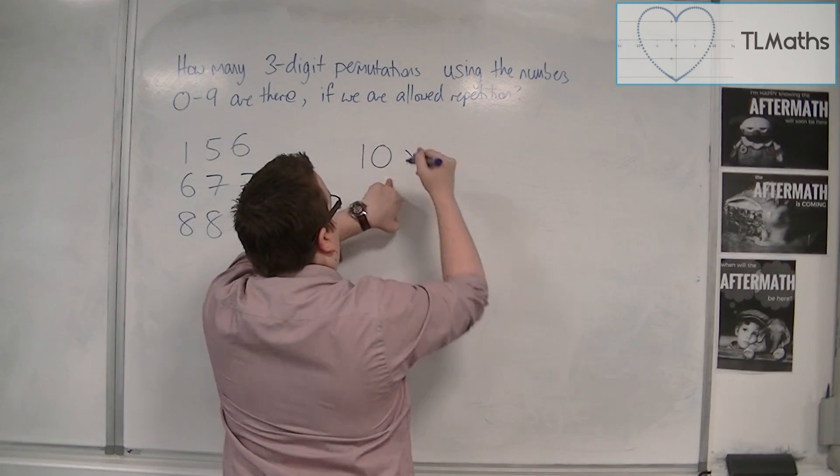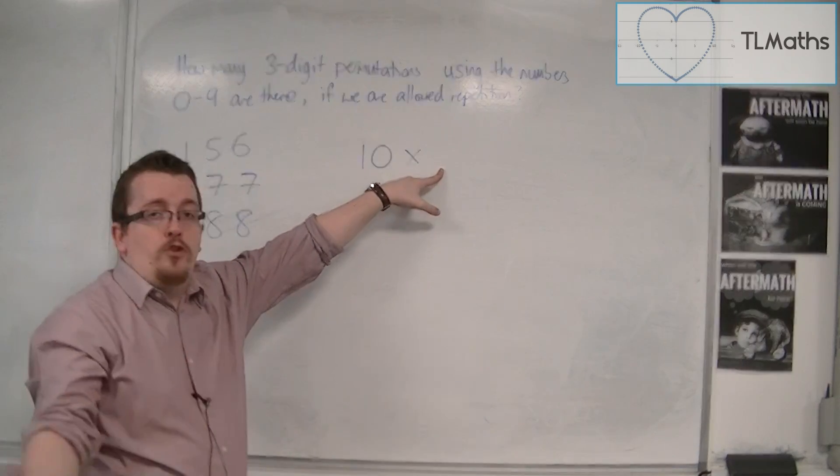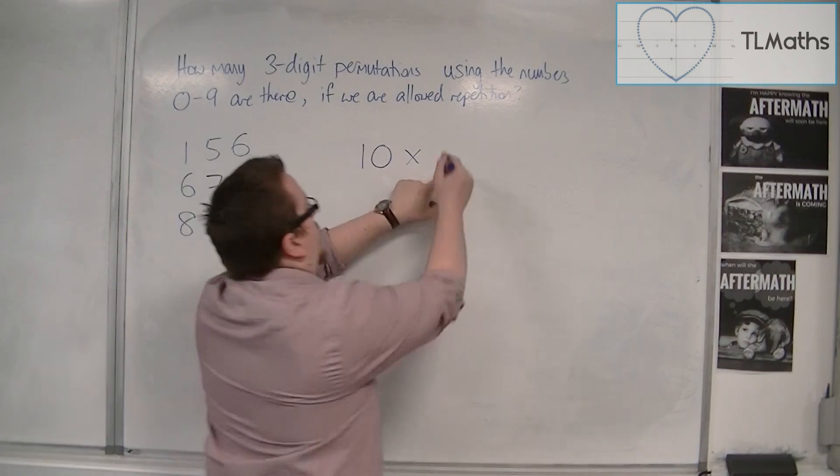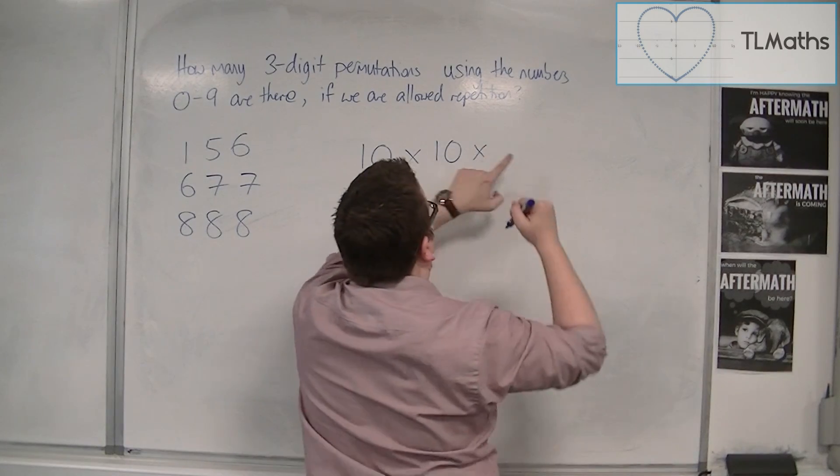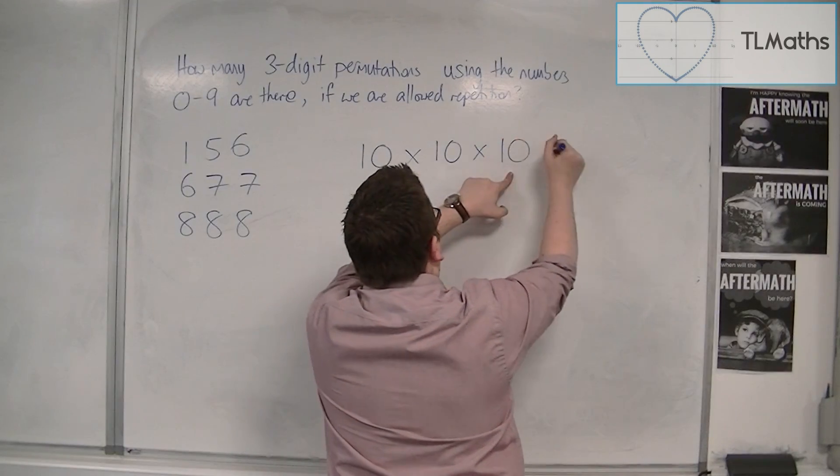And then for my second number, I've got 10 choices again, 0 to 9. And then for my third number, I've got 10 choices again, 0 to 9.